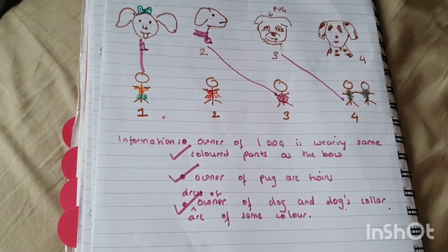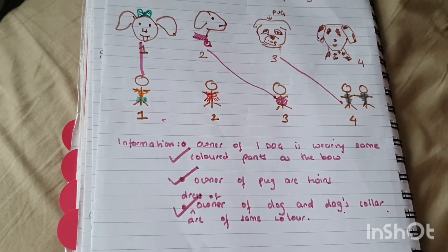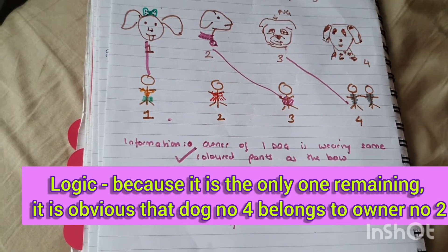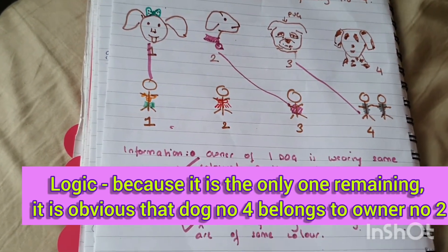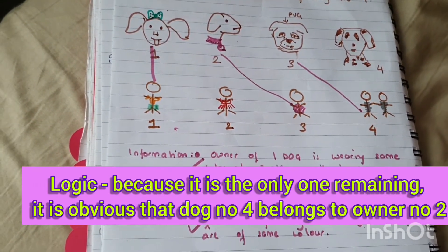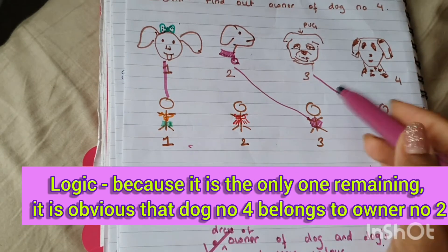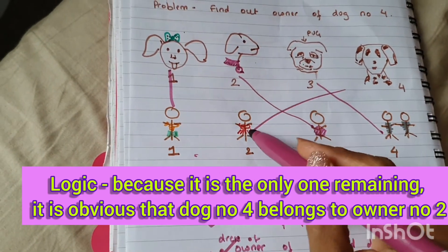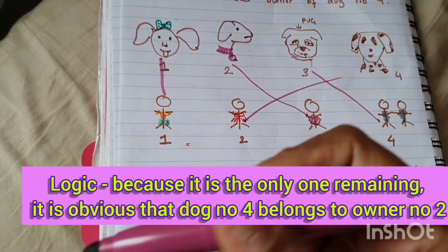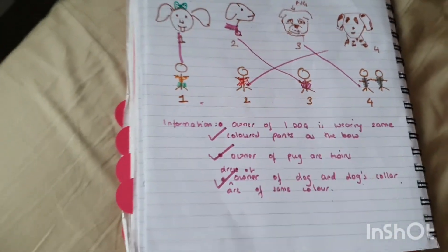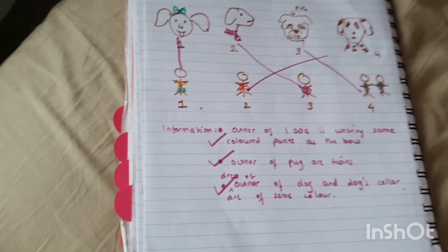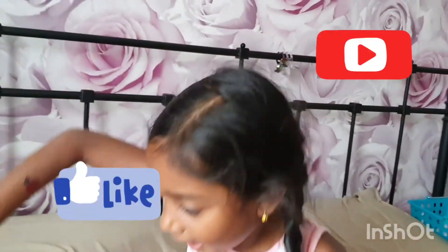We still don't have information about dog number four, but that's because it's the only one remaining. We've used the reasoning and connected each dog to its owner. So this is logic — it's quite simple actually, isn't it Prisha? Bye!